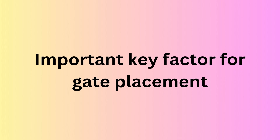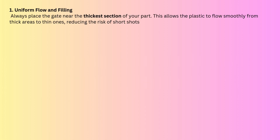The first key factor for gate placement is uniform flow and filling. We need uniform flow of molten plastic in the cavity as much as possible, because uneven flow can lead to defects like air traps or incomplete filling — short shot. Always place the gate near the thickest section of your part, so plastic flows smoothly from the thick area to the thin area, reducing the risk of short shot.